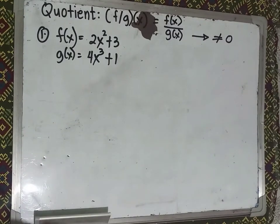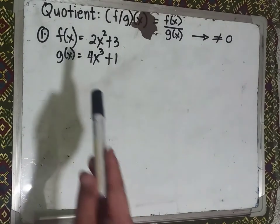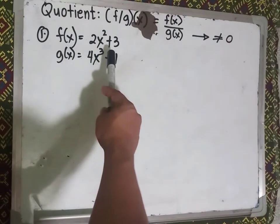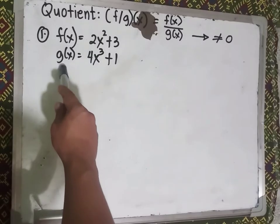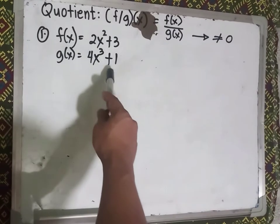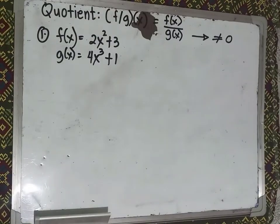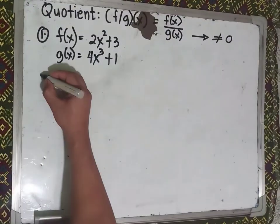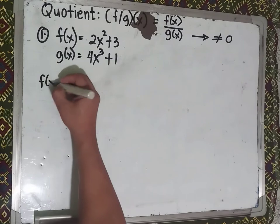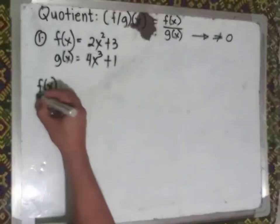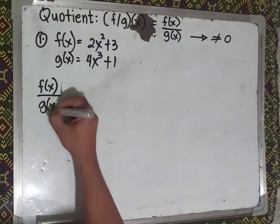Based on the given example, if we have f(x) = 2x² + 3 and g(x) = 4x³ + 1, find the quotient. Using the formula, we directly write f(x)/g(x).